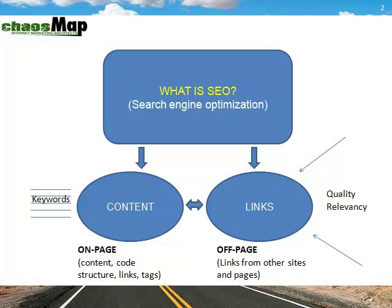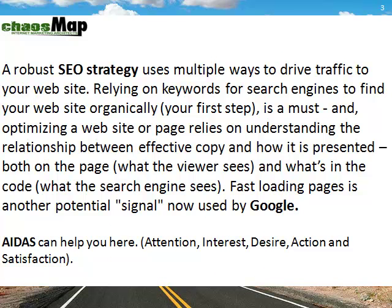Knowing how important content is and how important it is to have strategic links to your site, let's talk about it. We consider a robust SEO strategy to use multiple ways to drive traffic, and relying on keywords certainly is your first step. You must make sure that they match your website and optimize the pages and the underlying relationships on your page. Effective copy and how it's presented — both what the viewer sees and what's in the code — are very important. Fast loading pages is considered another signal used by Google, so you want to optimize across the board. When you think about copy and content, AIDAS can help you — that stands for attention, interest, desire, action, and satisfaction. Are you meeting all those objectives? You want to make sure you do.